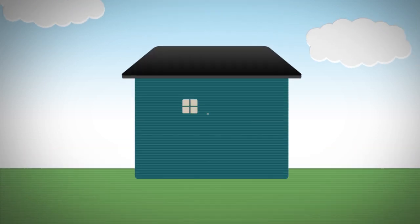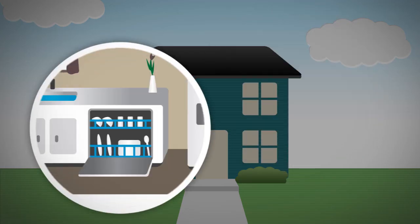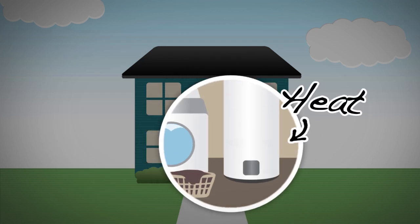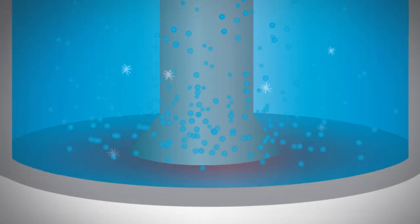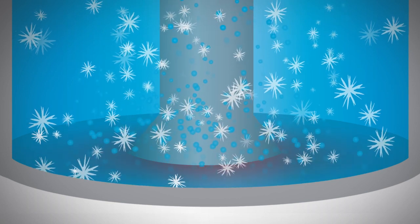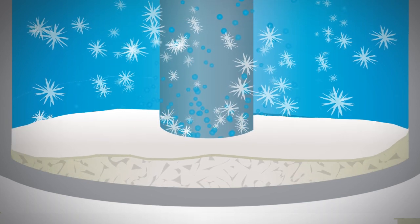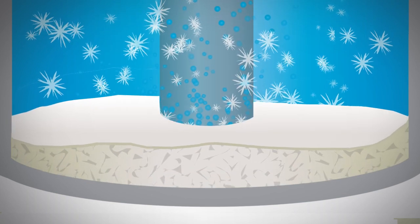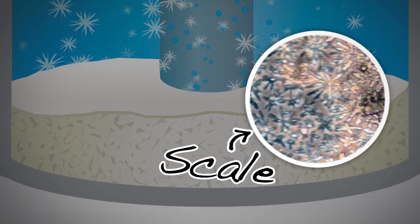As hard water enters your home, it encounters three types of stress: pressure change, turbulence, and especially heat. This causes dissolved mineral ions to come out of solution and form tree branch-shaped calcium carbonate minerals that have an electrostatic charge. This charge causes the minerals to stick to surfaces the water comes in contact with, resulting in scale buildup.